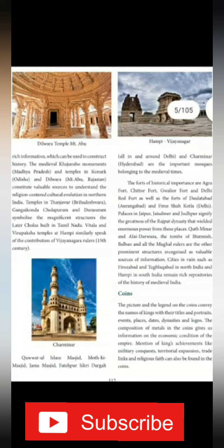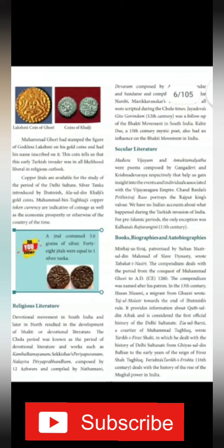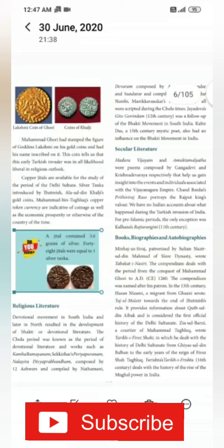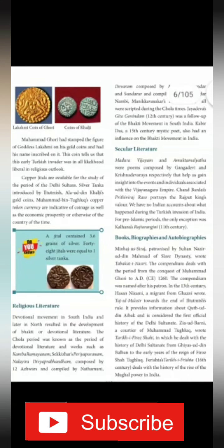For example, Mohamed Gori, the Turkish invader, stamped the figure of goddess Lakshmi on his gold coin and had his name inscribed on it. Even though he was an Islamic invader, from this we can understand that the Turkish invader was liberal in his religious outlook.